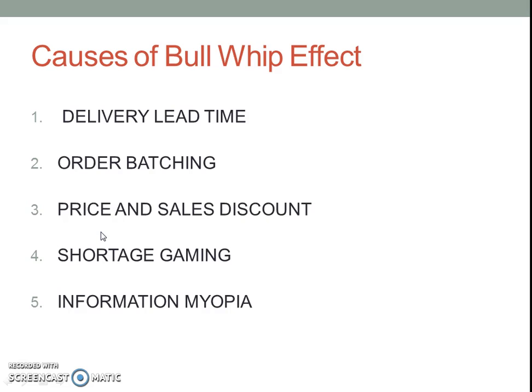The third cause is Price and Sales Discount. Prices and Sales Discounts send surges of demand from the customer end to the retailer. These sudden surges in demand, and as soon as the price discounts are withdrawn, there is a drop in sales. These sudden surges and drops in demand aggravate the Bullwhip Effect.